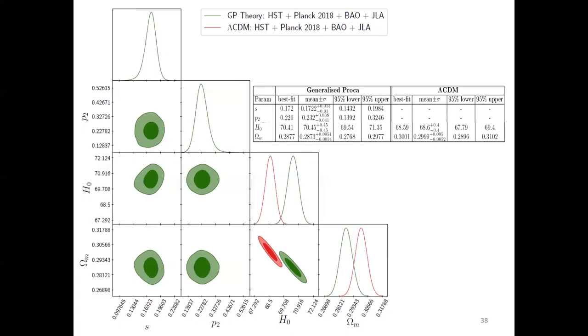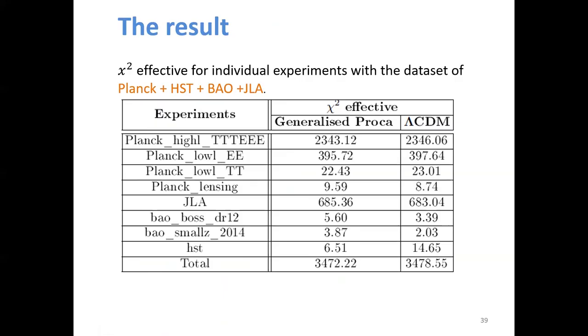Now we can see the fitting result based on all data sites, based on H0, CMB, BAO and supernova. We can see the S is also fitted very well, and the result of H0 is equal to 70 and can also be distinguished more than 2 sigma than the lambda CDM's result. In this one, we can see the chi-square effective for individual experiment. The generalized Proca theory also has a smaller value in every CMB measurement, but has a larger chi-square than lambda CDM in the BAO and the supernova data. In the total data, this theory has a smaller chi-square than the lambda CDM with one more free parameter.